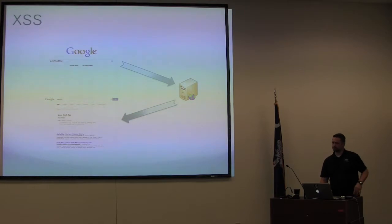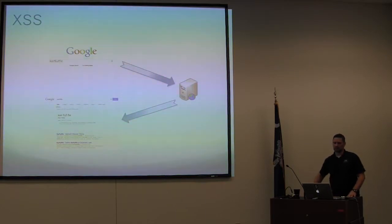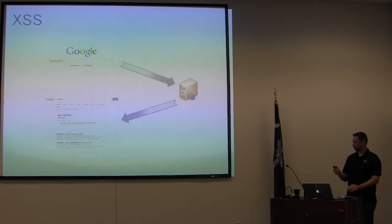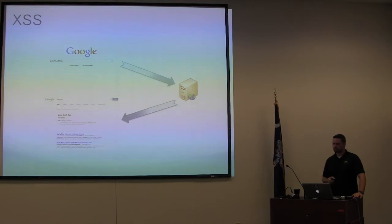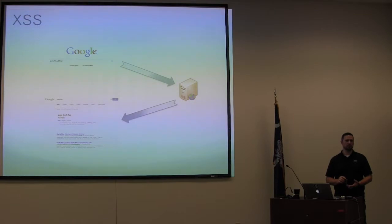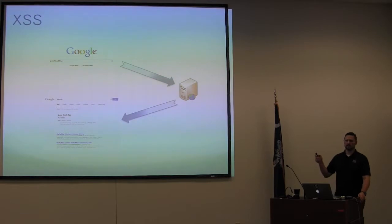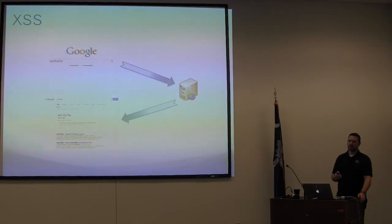On a standard web form, you enter a search term, it gets sent to the server, the server processes it and sends it back to the client. For cross-site scripting there are a few different types. When people first discovered it, they named them reflected and stored cross-site scripting. Reflected means something is sent from the user to the server and back to the user — there's your reflection. Stored was very common in the early days of web forums, where users can upload data that's permanently stored.